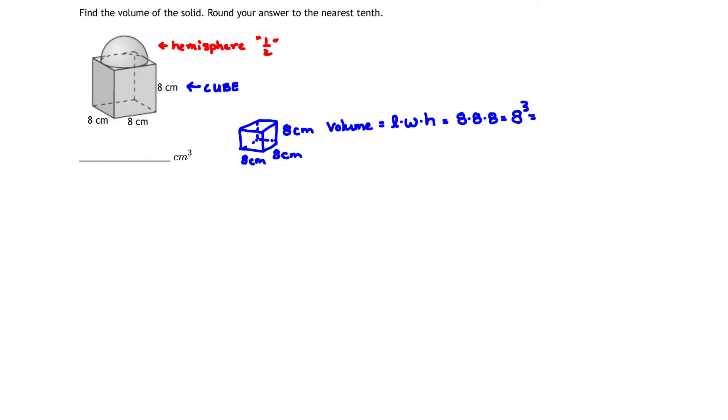We're going to put that into our calculator, and when we take 8 times 8 times 8, we get the value 512. So that tells me that the volume of our cube on the bottom is 512 centimeters cubed.